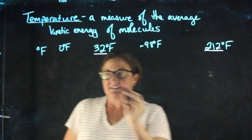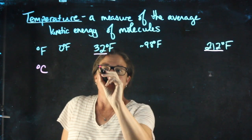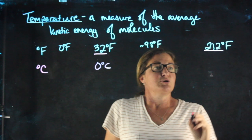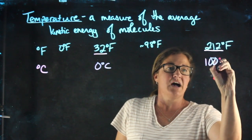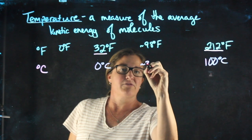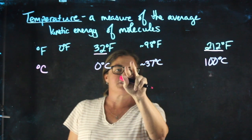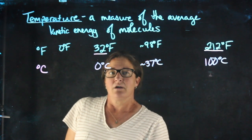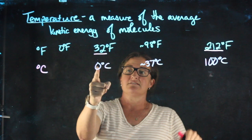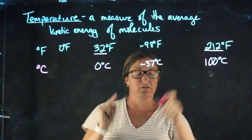When we work in the Celsius scale — degrees Celsius — 32 degrees Fahrenheit is 0 degrees Celsius, and 212 degrees Fahrenheit is 100 degrees Celsius. Body temperature is about 37 degrees Celsius, and room temperature is considered in the low 20s. The Celsius scale is also called the centigrade scale, because we have 100 degrees separating the freezing point and the boiling point of water.